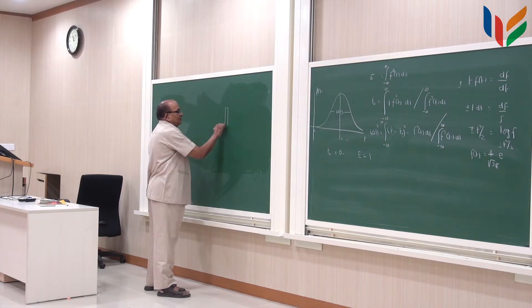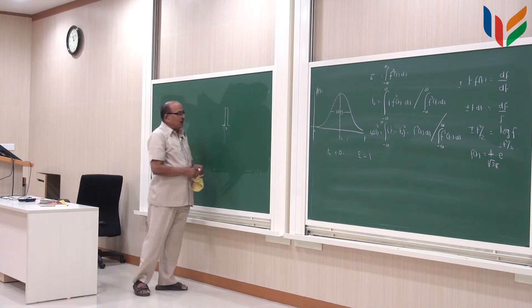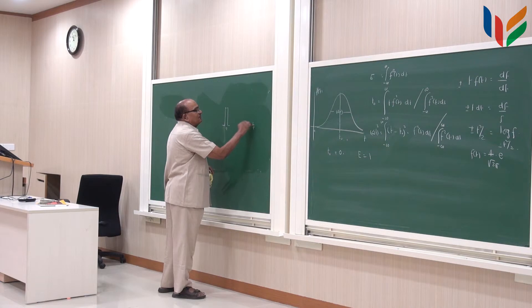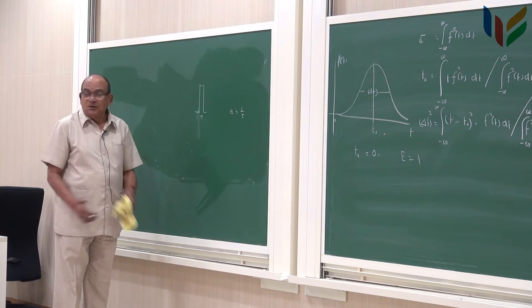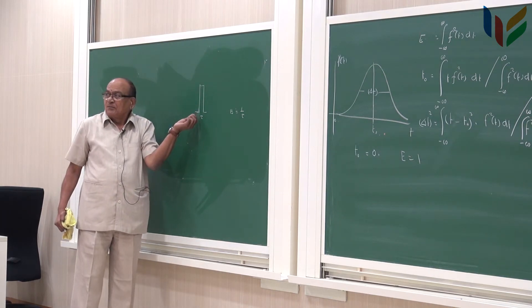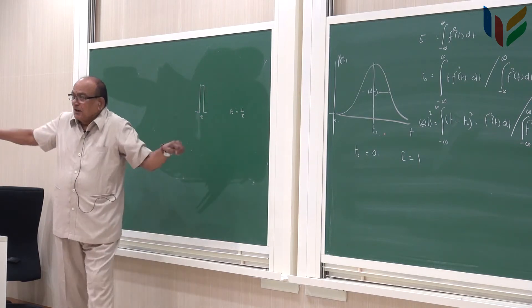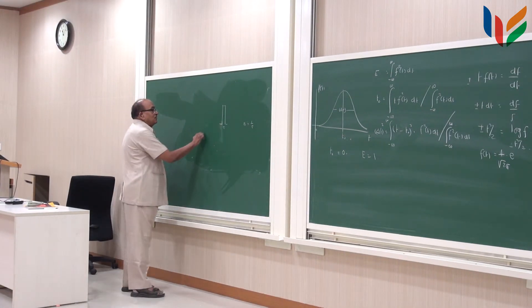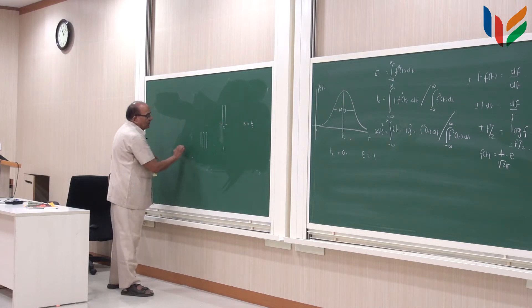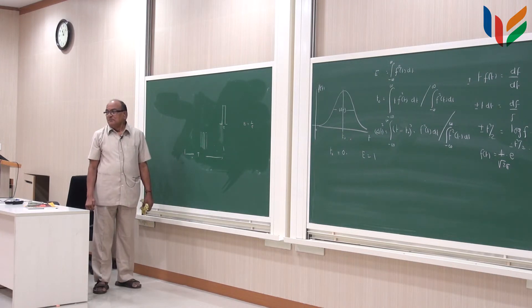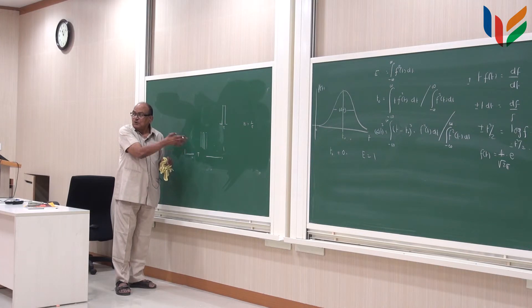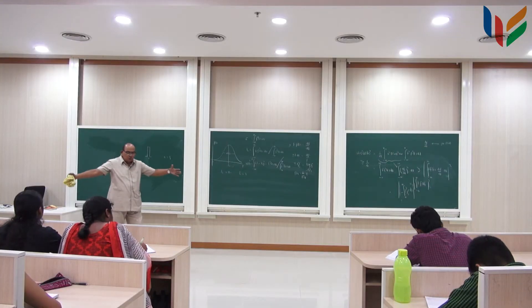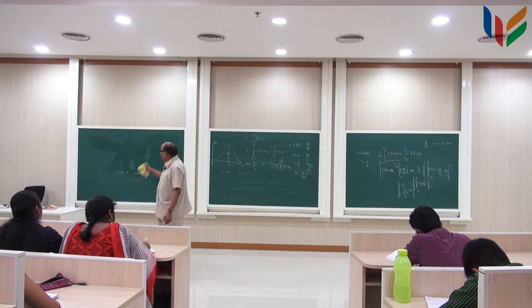If I have a pulse of duration tau, we agreed in the last class the bandwidth is proportional to 1/tau by some definition. Now, if I want to increase the bandwidth I narrow the pulse — make it very narrow. But narrowing does not increase the time duration. So what I do is take such narrow pulses and stack them to make any duration T I want. I make a time signal with positive and negative pulses in some random manner, ending up with a signal of large duration T but very large bandwidth because each pulse is very narrow.